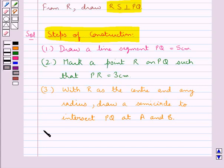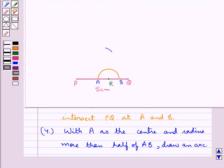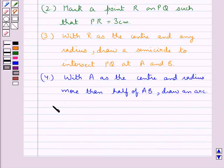We have points A and B. Then in the next step, with A as the center and radius more than half of AB, we draw an arc.